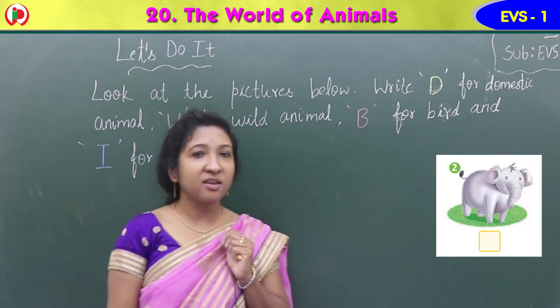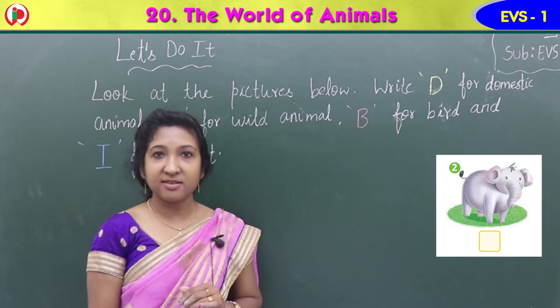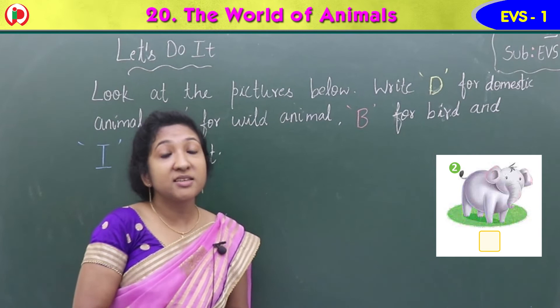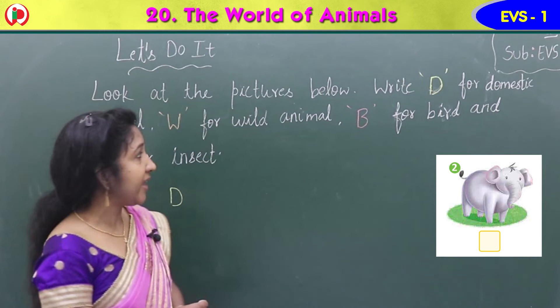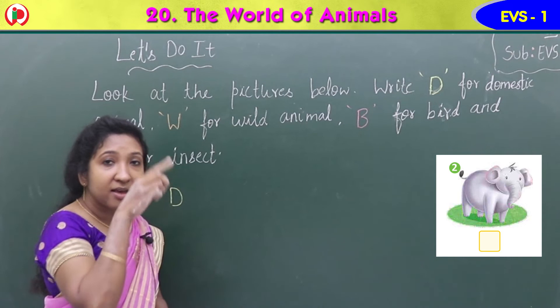Now see the second image. Which animal you can see? The biggest animal — yes, it is an elephant. Is elephant domestic, wild, bird, or insect? Elephant is a wild animal; it lives in the forest. So you have to write W under the image in the square box.